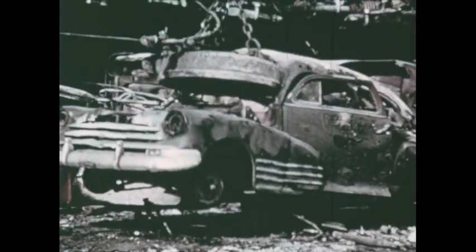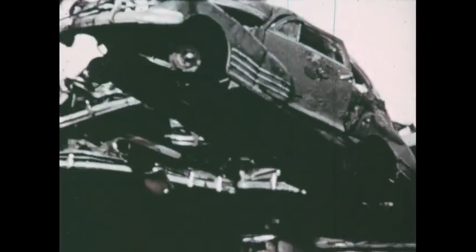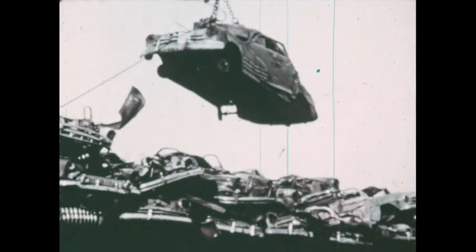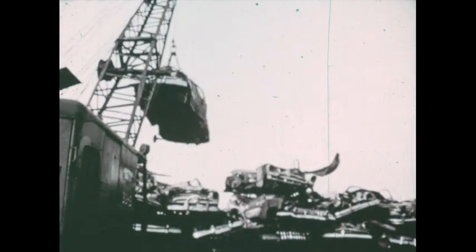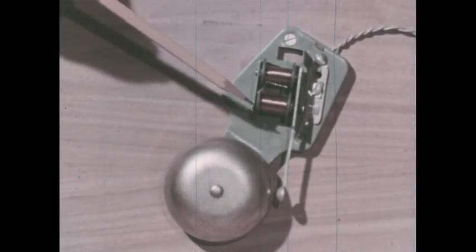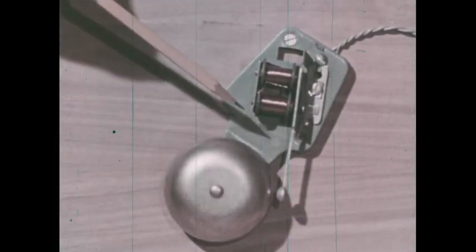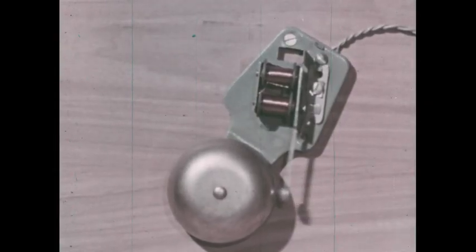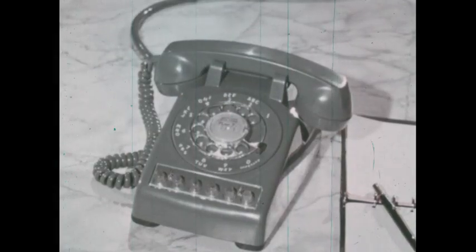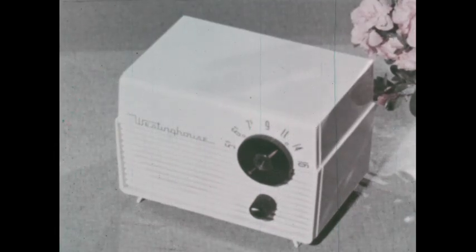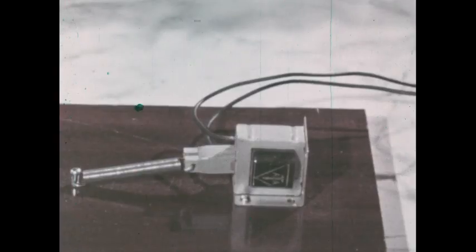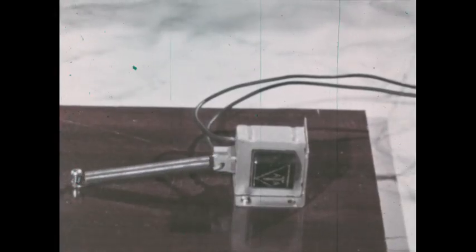This huge loading crane uses an electromagnet. A small electromagnet makes a doorbell ring, makes possible the telephone, the telegraph, the loudspeaker of your radio or television set. These and many other things depend on magnetism produced by an electric current.